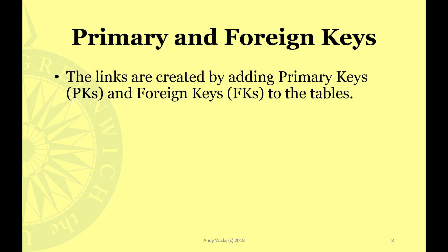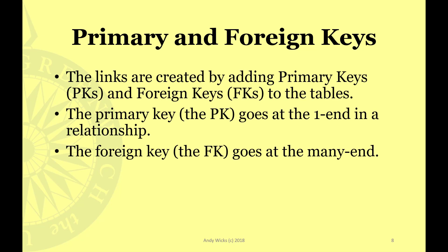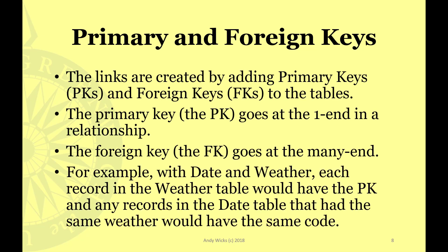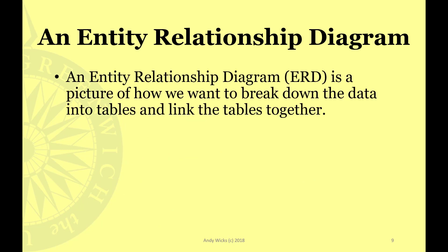Primary and foreign keys are the links created by adding these fields to the tables. The primary key goes at the 'one' end of a relationship, and the foreign key goes at the 'many' end. For example, with date and weather, each record in the weather table would have a primary key. Any records in the date table that had the same weather would use that same key — but there it would be a foreign key, because it comes from a different table.